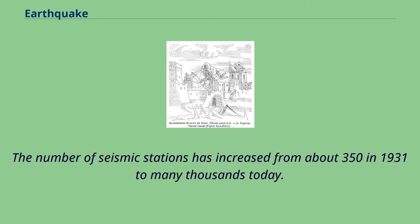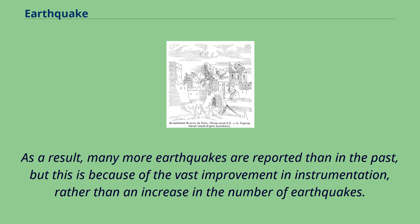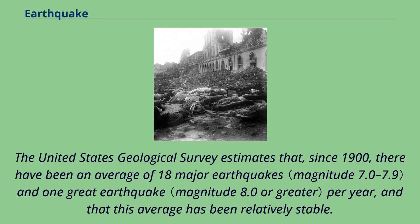The number of seismic stations has increased from about 350 in 1931 to many thousands today. As a result, many more earthquakes are reported than in the past, but this is because of the vast improvement in instrumentation rather than an increase in the number of earthquakes. The United States Geological Survey estimates that since 1900, there have been an average of 18 major earthquakes and one great earthquake per year, and that this average has been relatively stable.